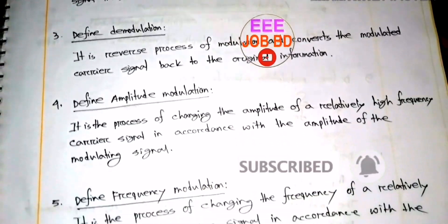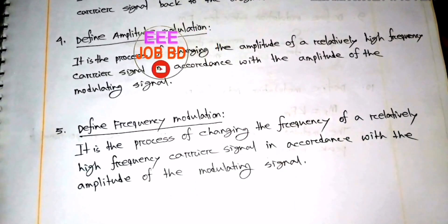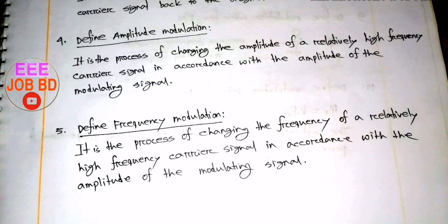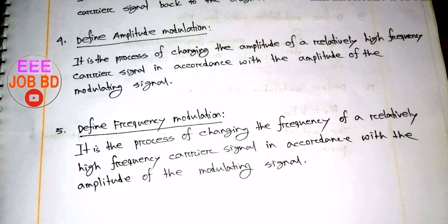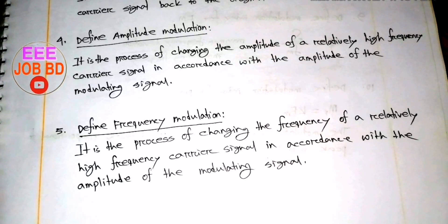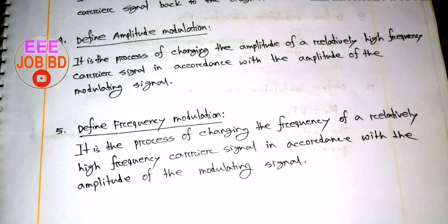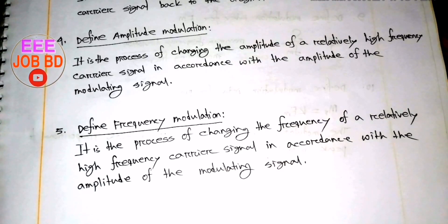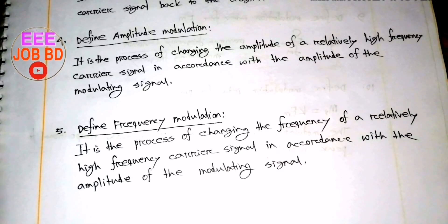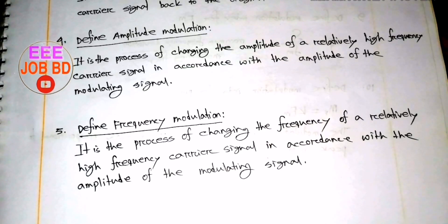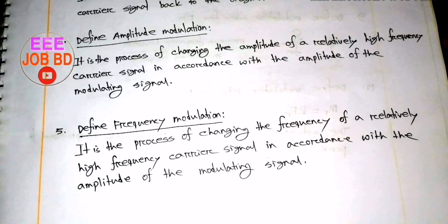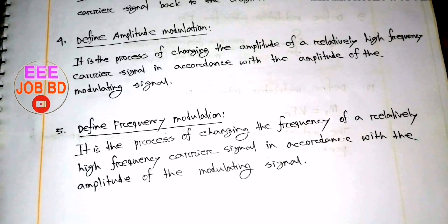This is Frequency Modulation (FM). It is very simple. What is the frequency change? The carrier signal undergoes frequency change, while the modulating signal is the amplitude. The modulating signal is the amplitude and the carrier signal is the frequency.